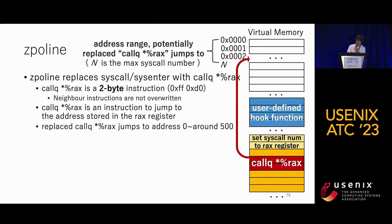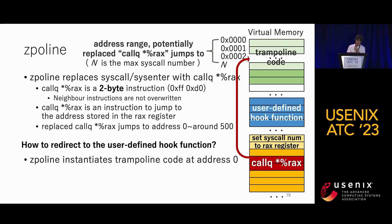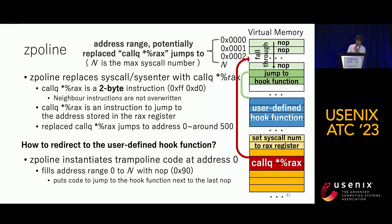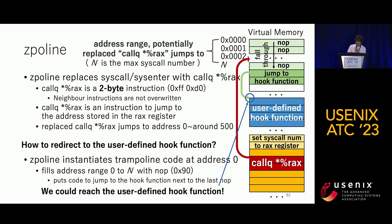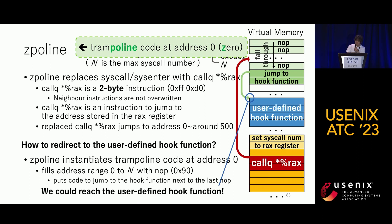The next question is how to redirect execution to the user-defined hook function. To do this, we put the trampoline code at address zero. In this trampoline code, we fill the address range from zero to N with NOPs, so execution falls through after N. Then we put a call to jump to the hook function right after the last NOP. This way we reach the user-defined hook function. By the way, the name Zeppelin comes from this trampoline code at address zero.